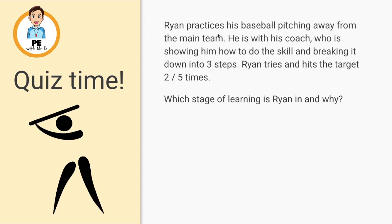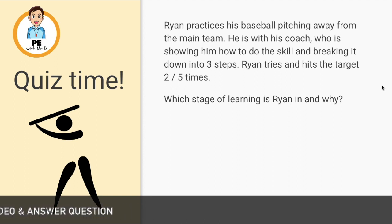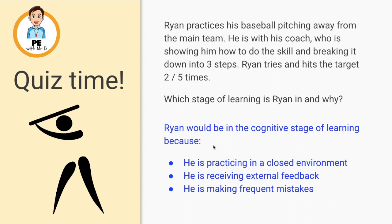Scenario two: Ryan is practicing his baseball pitching away from the main team. He's with his coach, who is showing him how to do the skill and breaking it down into three simple steps. Ryan tries and hits the target 2 out of 5 times. Which stage of learning is Ryan in and why? Ryan would be in the cognitive stage of learning, because he is practicing in a closed environment away from the main team, he is receiving external feedback from his coach, and he's making frequent mistakes — only hitting the target 2 out of 5 times.